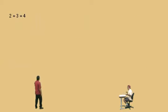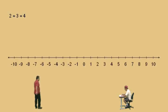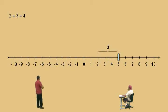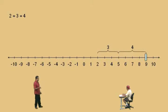Let's look at this sum right here: 2 plus 3 plus 4, Charlie. Let's work this problem working left to right. So we start at 2 and we move to the right 3 times, which gives us 5. And now to the 5 we have to add the 4, and so we end up at 9. So 2 plus 3 plus 4 is 9.